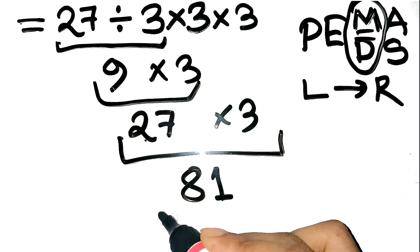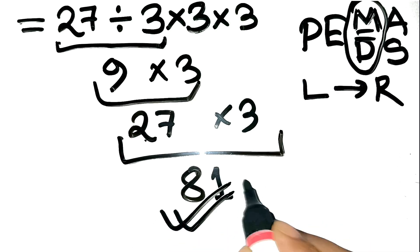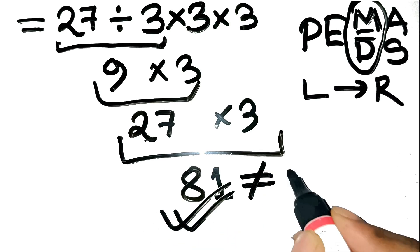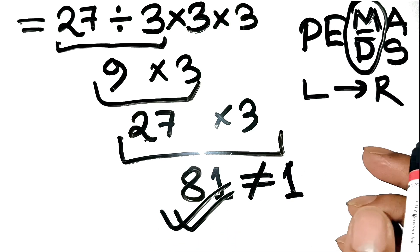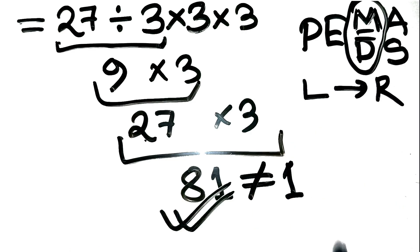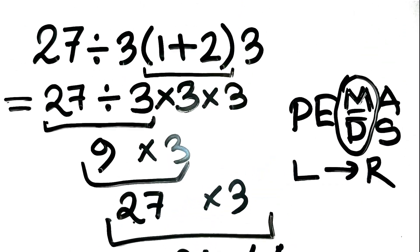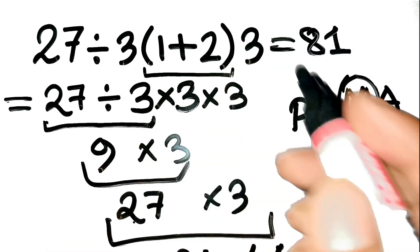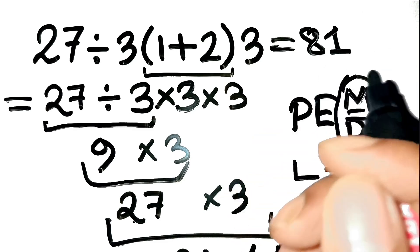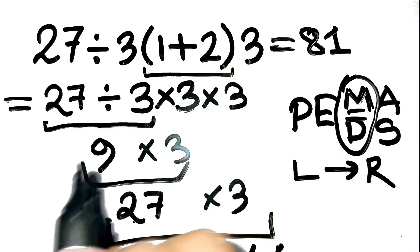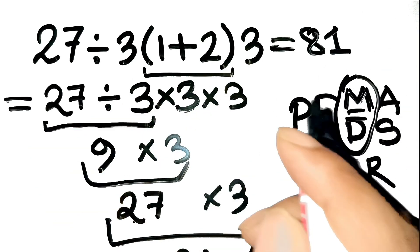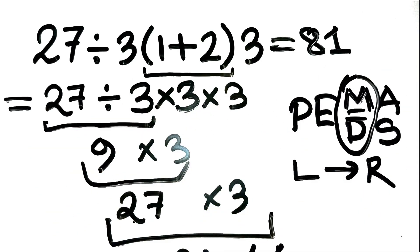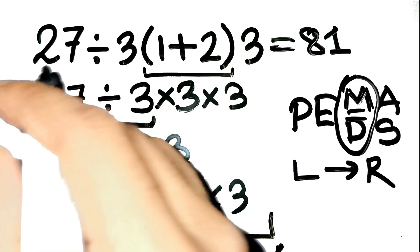So the correct answer is 81, not 1. Crazy how a simple left-to-right rule completely flips the result. If you have any valid arguments or solved it a different way, write it in the comments — I'd love to see your thinking. Thanks for watching, and share this with a friend who thinks math problems like this are easy.